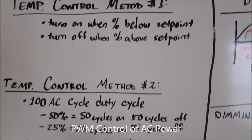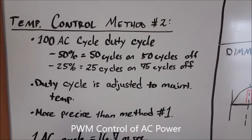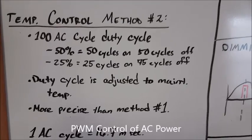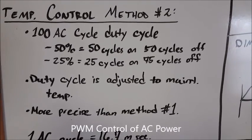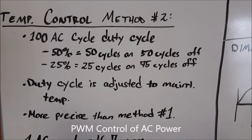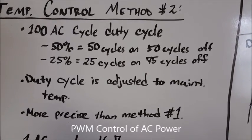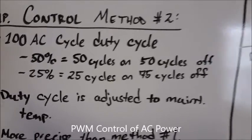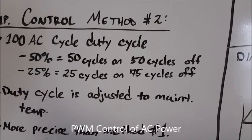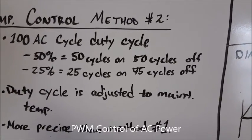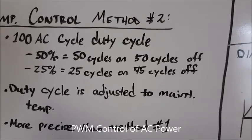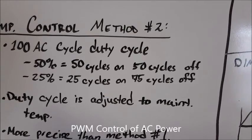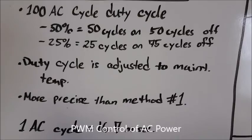A better method of temperature control is method number two, using a 100 AC duty cycle. 100 cycles of AC equals one control cycle, so 50% on would equal 50 AC cycles on and 50 off. A 25% duty cycle equals 25 cycles on and 75 off.